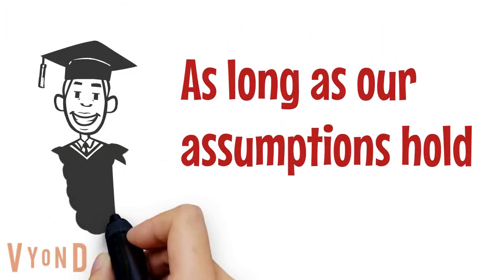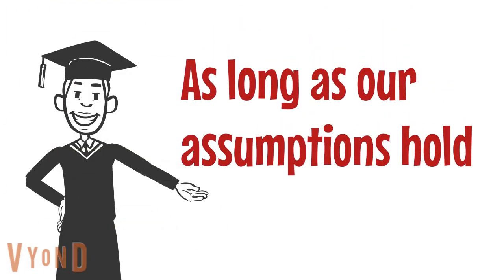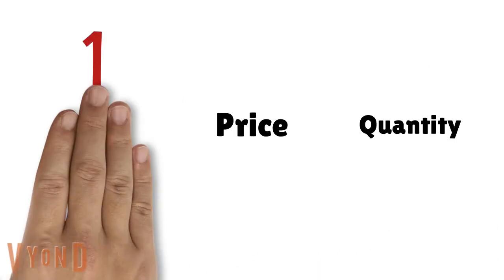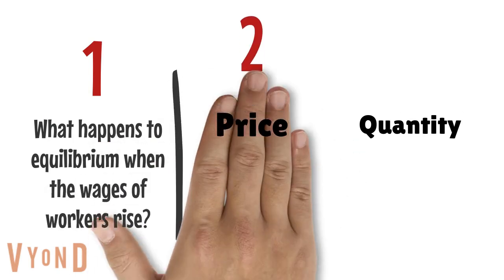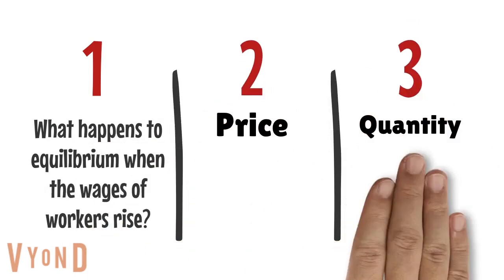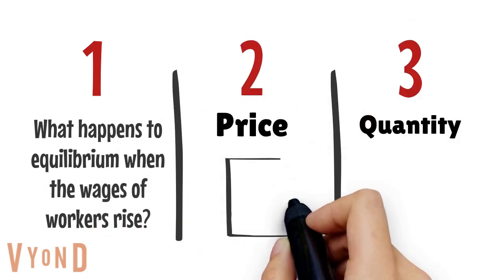Now, there's a problem with that, which is that all those assumptions — that there are lots of buyers and sellers, that there's good information, that people have all the free choice they need, both businesses and consumers — those assumptions have to hold if this is going to work. Let's do a couple of thought experiments about what happens in markets.